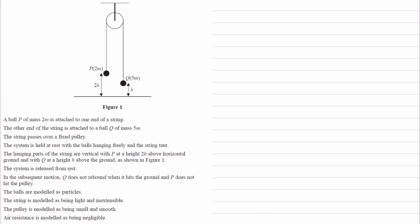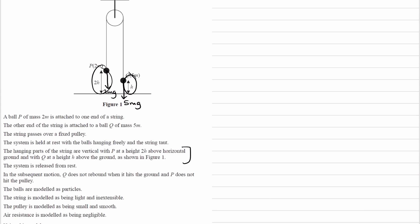A ball P of mass 2m is attached to one end of a string, so the weight is then 2mg. And then on the other end of the string is attached ball Q, the mass of that is 5m, so weight is 5mg. And then we're told that the string passes over a fixed pulley, it's held at rest to begin with, the balls are hanging freely, the string is taut, we're told the string is vertical. We're given the distances above the ground as well, which are on the diagram.